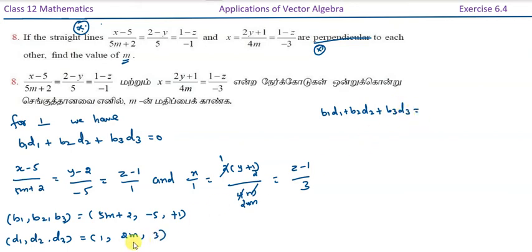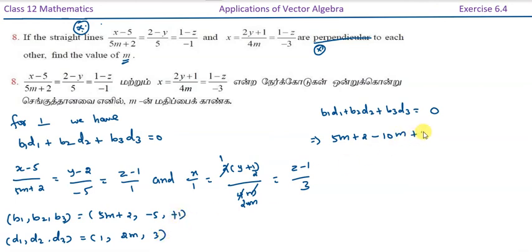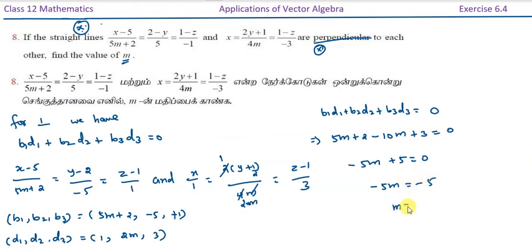Applying the perpendicularity condition, we multiply corresponding direction ratios: (5m plus 2) into 1, plus (minus 5) into 2m, plus (minus 1) into 3 equals 0. This gives 5m plus 2 minus 10m minus 3 equals 0, so minus 5m plus 5 equals 0, therefore minus 5m equals minus 5, therefore m equals 1.